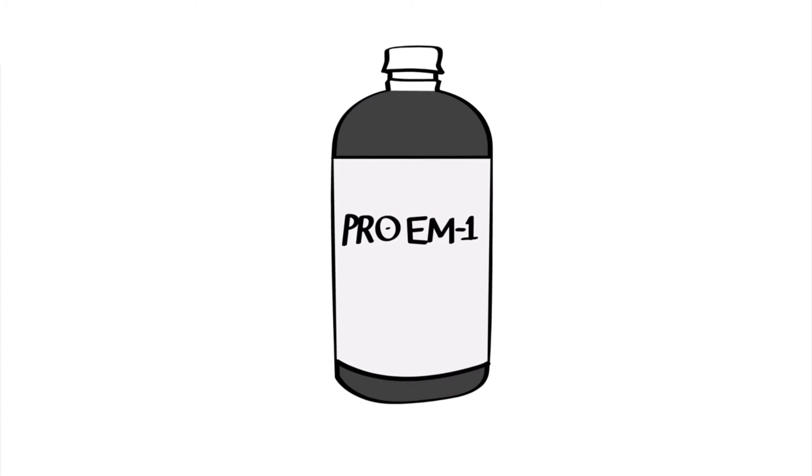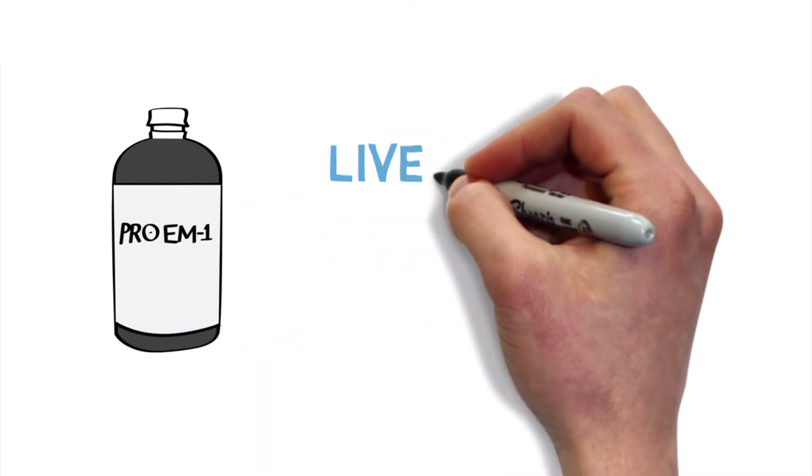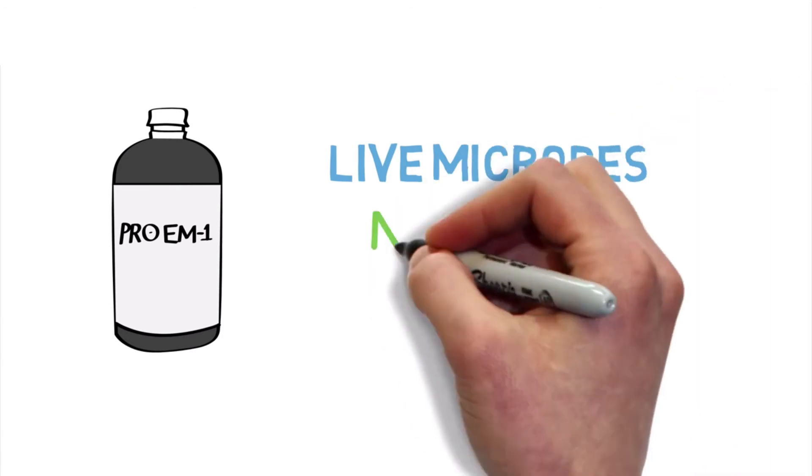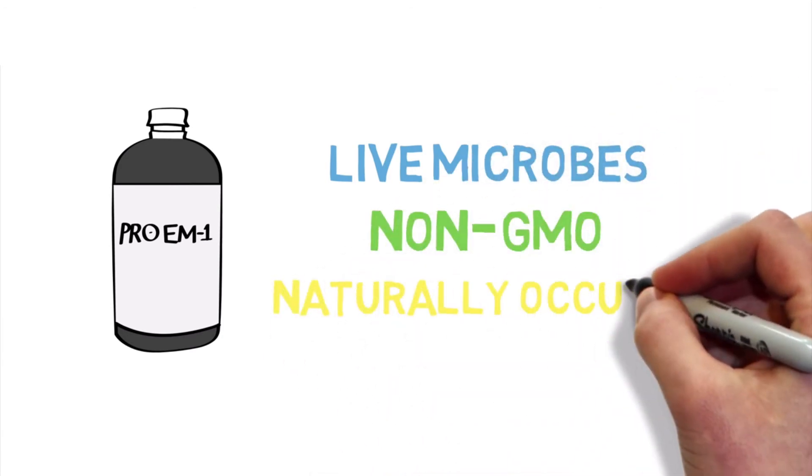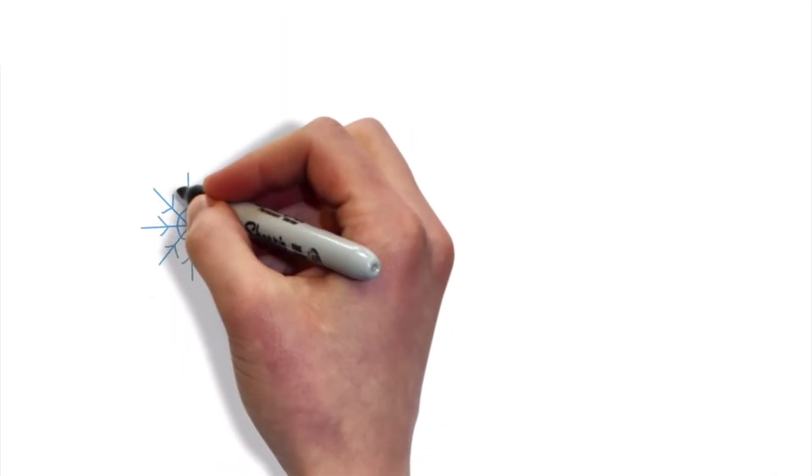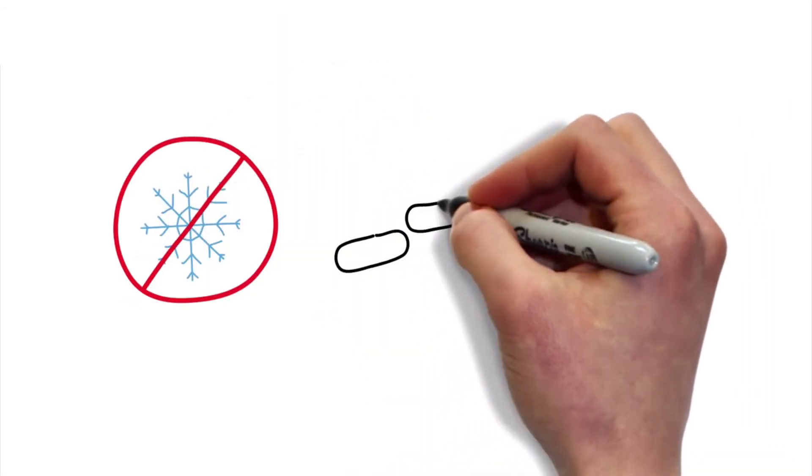Pro-EM-1 is a faster, more effective probiotic solution. As a liquid probiotic, it contains live microbes that are non-genetically modified and naturally occurring. There is no freeze dried process, no capsules, no additional supplements, no money being flushed down the toilet.